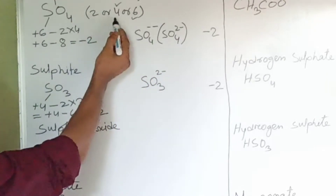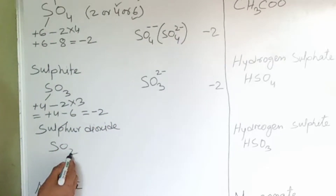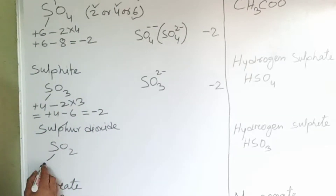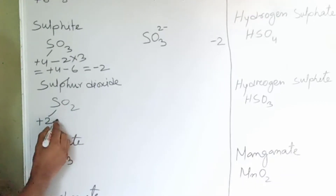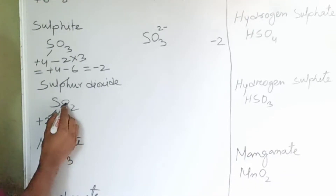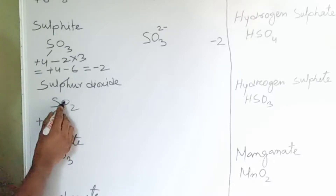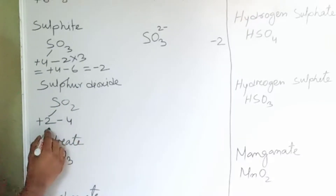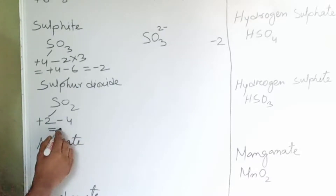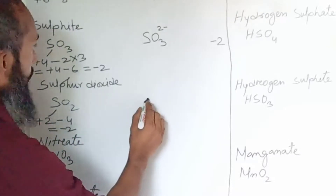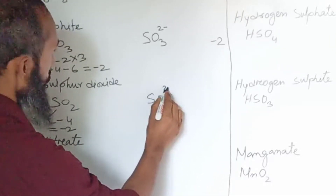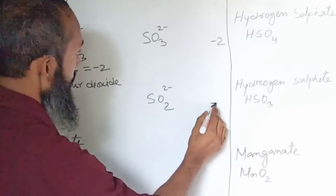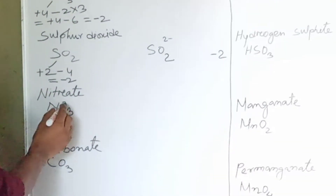Now sulfur dioxide — sulfur valency is either 2, 4, or 6. As the number of oxygen atoms present is less, we will select 2 as the valency. Sulfur is electropositive, oxygen is electronegative with valency 2. Here 2 times 2 gives 4, so plus 2 minus 4, valency becomes minus 2. Its symbol is SO2 2-minus.